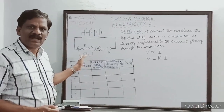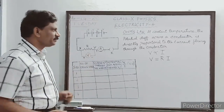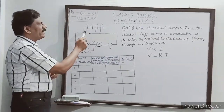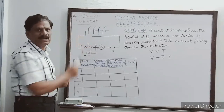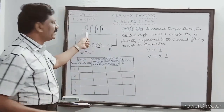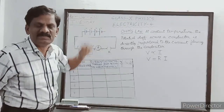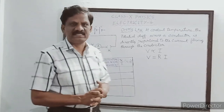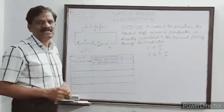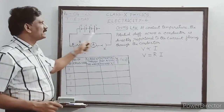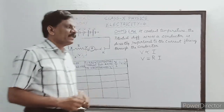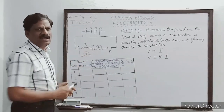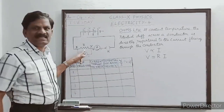Look at the circuit. This single device is called a cell. How many cells are connected in series? That is four cells connected in series. The combination of these four cells acts like a battery.